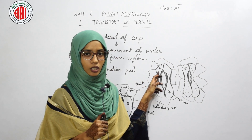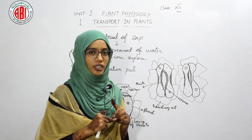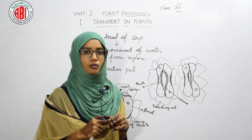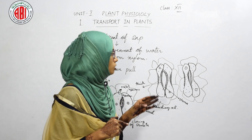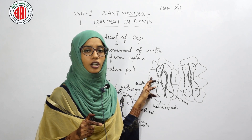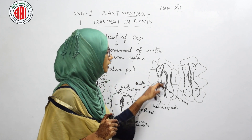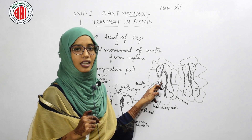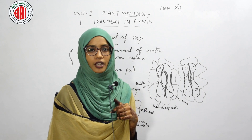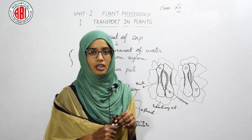Among the epidermal cells, only the guard cells contain chloroplast. Due to the presence of chloroplast, the stomata open only during photosynthesis — that is, in the presence of sunlight — and close during night due to absence of sunlight. Other epidermal cells do not contain chloroplast. Therefore, the guard cells with chloroplast allow stomata to help in transpiration and also in the exchange of gases. That's all for today; the remaining topics under the chapter transporting plants will be discussed in the next class.